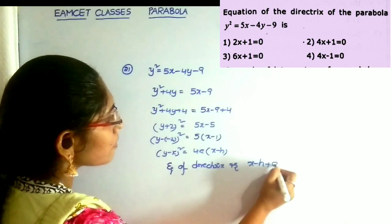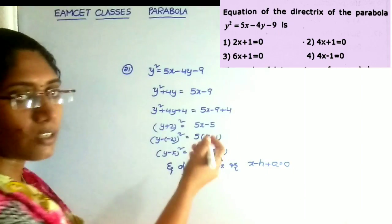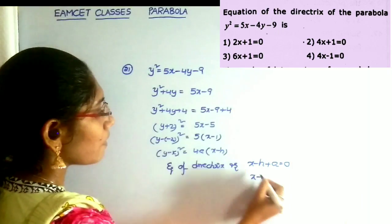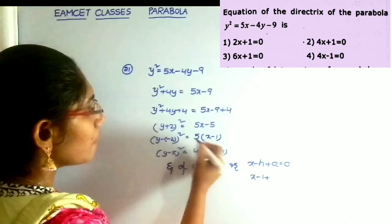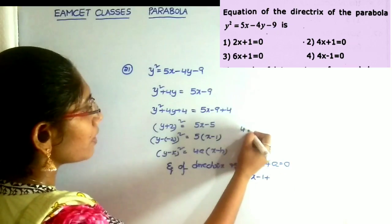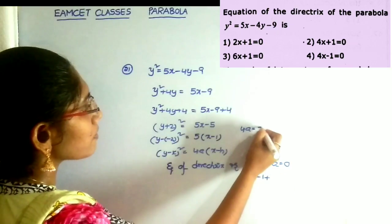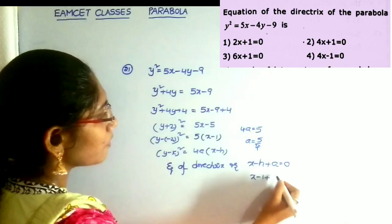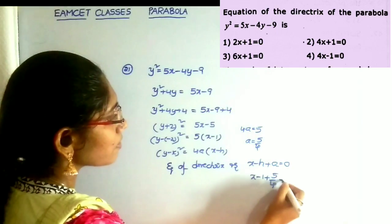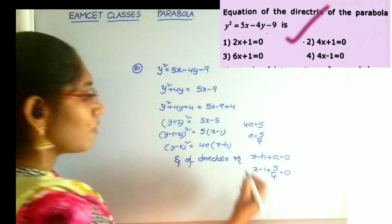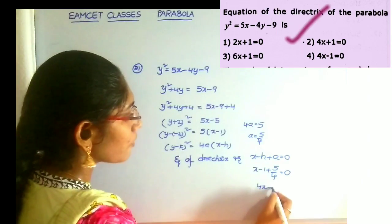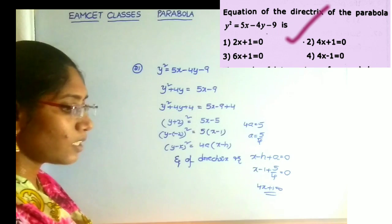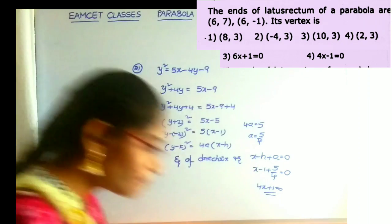The equation of the directrix formula is x minus h plus a equals 0. Here h equals 1. Since 4a equals 5, a equals 5/4. Substituting and simplifying, we get 4x plus 1 equals 0. That is all, and this is the second option.